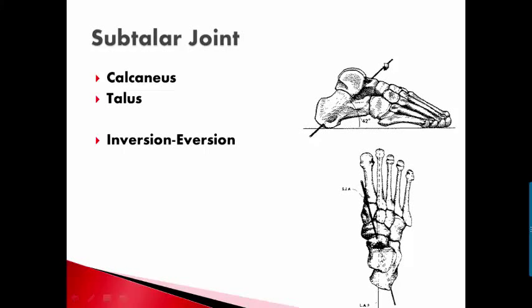Now we'll review two multi-planar motions at two different joints, one being the subtalar joint which is between the calcaneus and the talus. As we mentioned in one of the previous lectures, it is responsible for inversion and eversion motions.